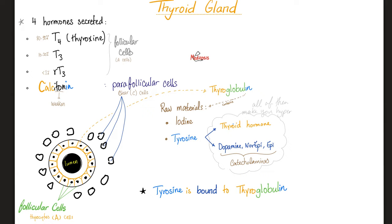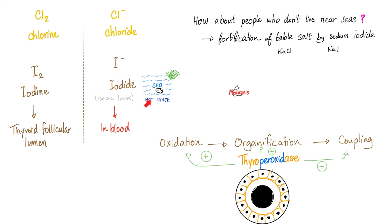What are the raw materials needed to make thyroid hormone? You need iodine and you need tyrosine. There is a carrier carrying them for you, and this carrier is called thyroglobulin — which is a globulin, which means it's a protein. Let's say I live near the sea, so I get some iodide in my body. This iodide is in the blood and will go into the thyroid gland. Then you combine one iodide and another iodide together to make iodine. Now the iodine is in the thyroid follicle. What do you do with it? Oxidation, organification, and coupling.